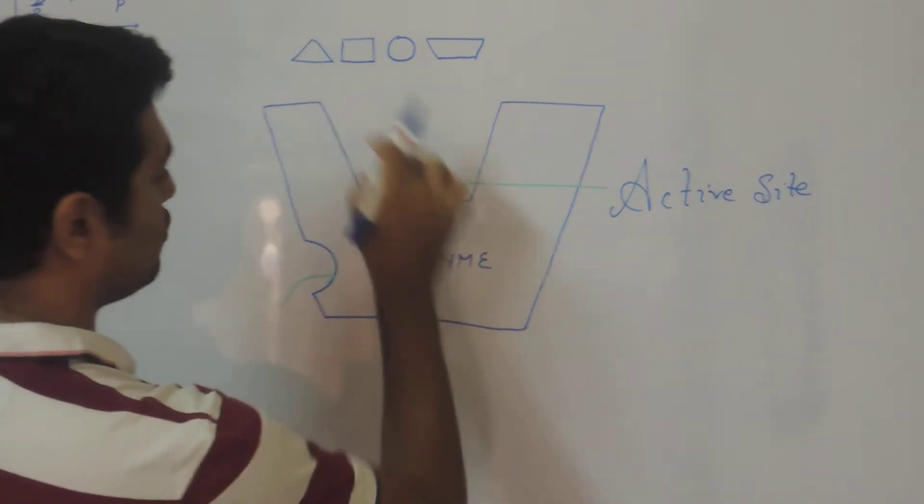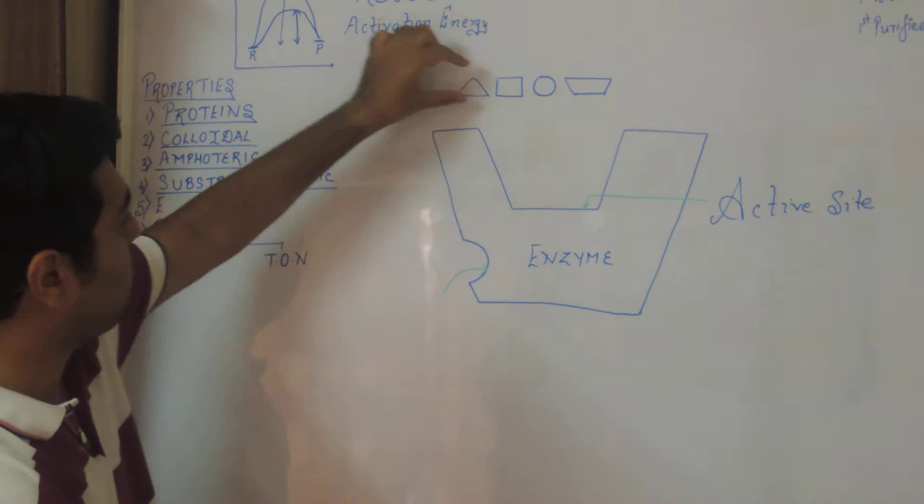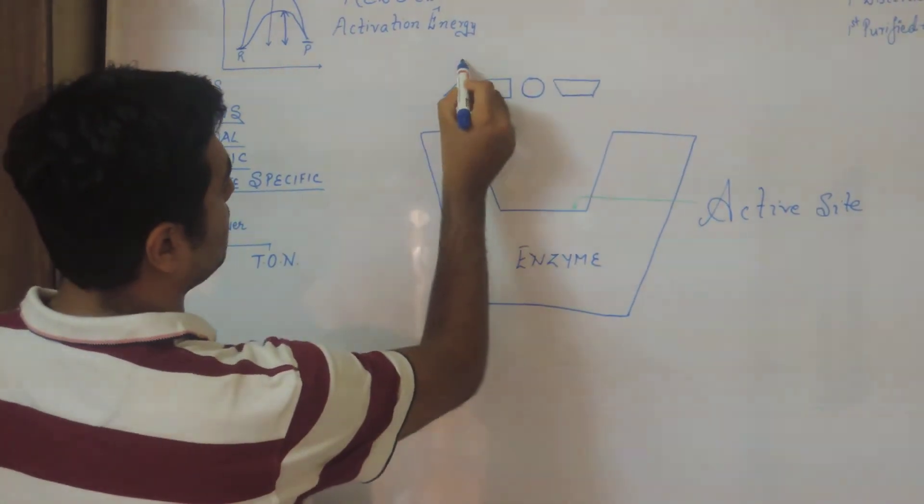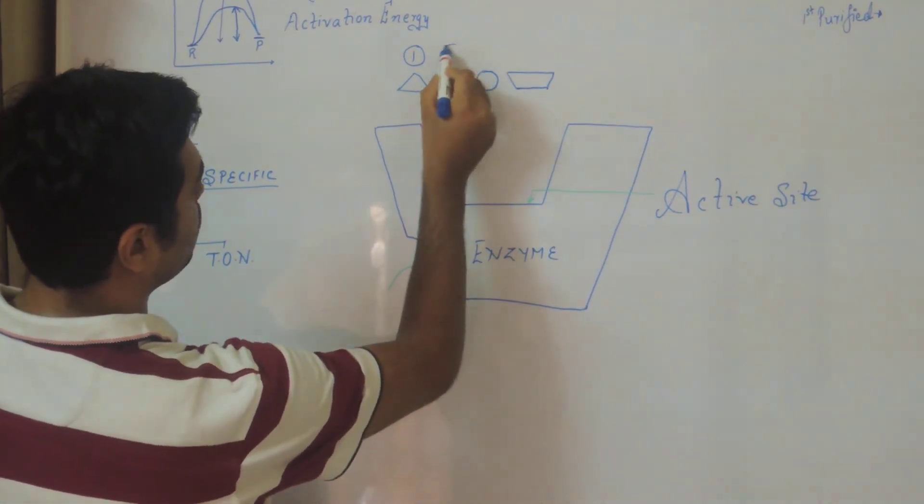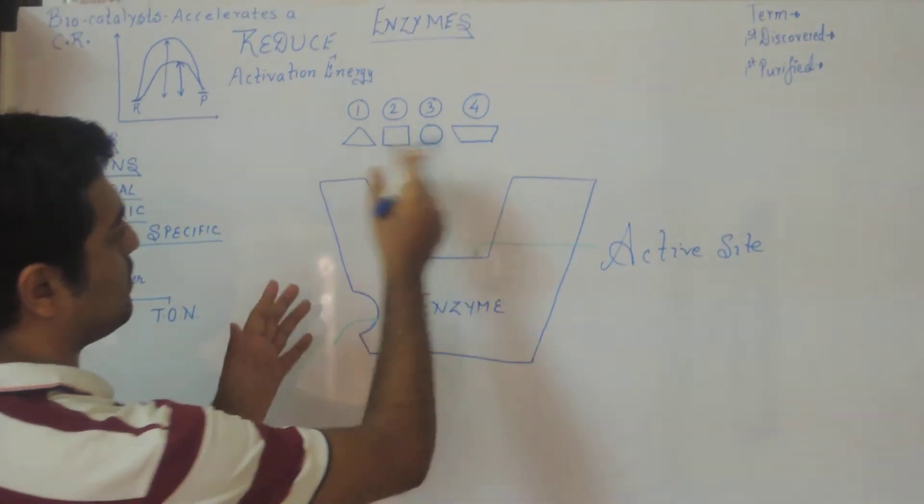Such sites are known as the active sites. So the active site is the structure. It is a specific design where a substrate will come and bind. So suppose I am taking particular substrates example. There is substrate number 1, substrate number 2, substrate number 3, substrate number 4. There are 4 different types of substrates.